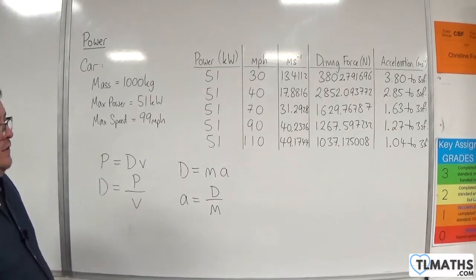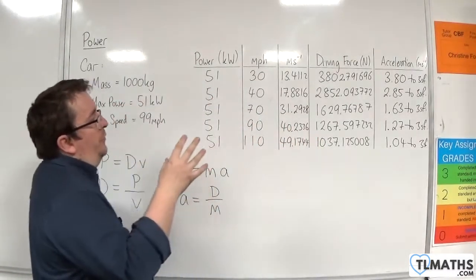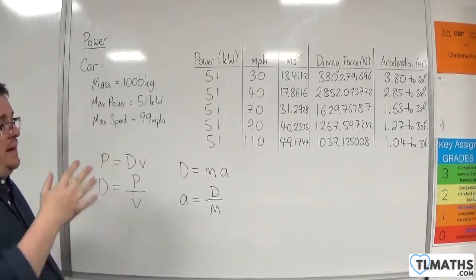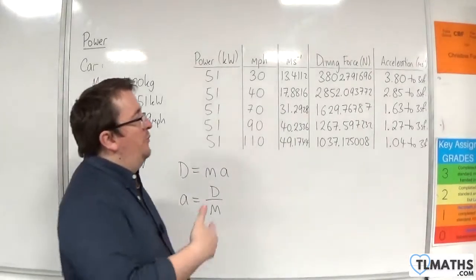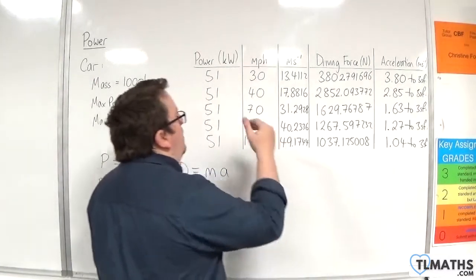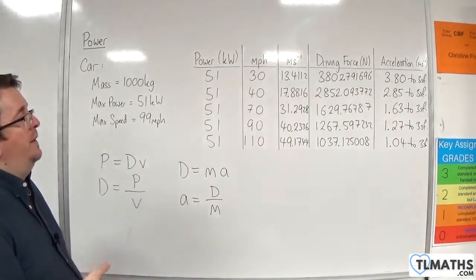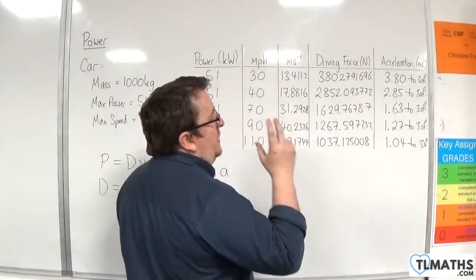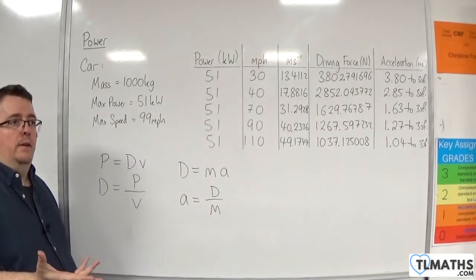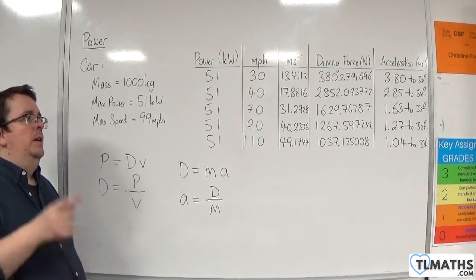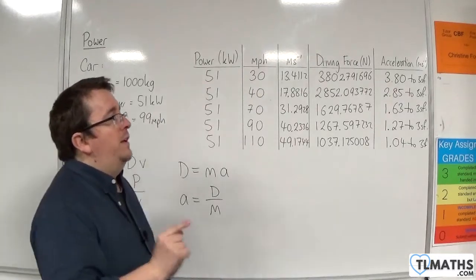The second thing is that as the speed increases, the acceleration is decreasing. So it's important to note that when we are trying to find the maximum speed of a car or a motorbike or a lorry or something like that, we are looking at the acceleration getting closer and closer and closer to zero. The maximum speed should occur when the acceleration is zero.